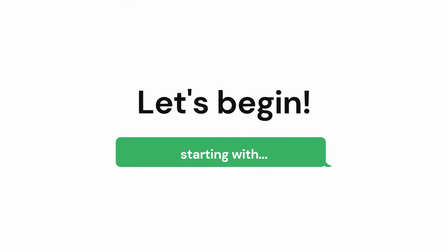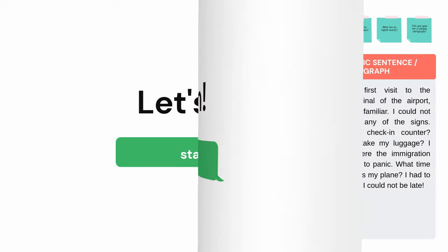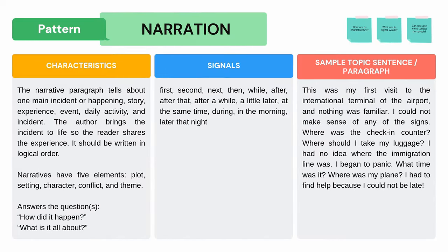Let's begin with Narration. The narrative paragraph tells about one main incident or happening — story, experience, event, daily activity, and incident. The author brings the incident to life so the reader shares the experience. It should be written in logical order. Narratives have five elements: plot, setting, character, conflict, and theme.